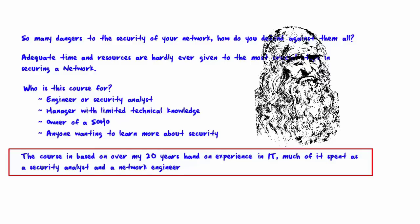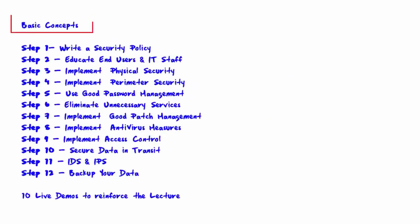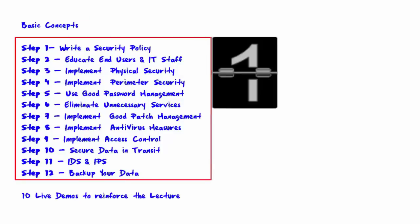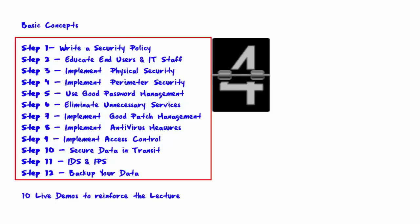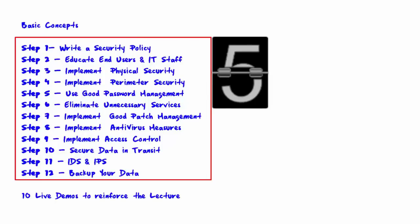So let's talk specifically about what we'll cover. We'll start with basic concepts, then move to the steps. Step one: write a security policy. Step two: educate end users and IT staff. Step three: implement physical security. Step four: implement perimeter security. Step five: use good password management. Step six: eliminate unnecessary services.